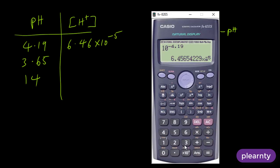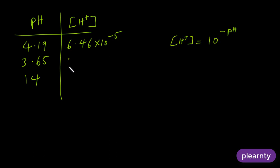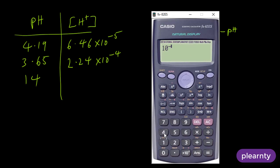Then we have 10 raised to power minus 3.65. 2.24 times 10 raised to power minus 4. 10 raised to power minus 4.